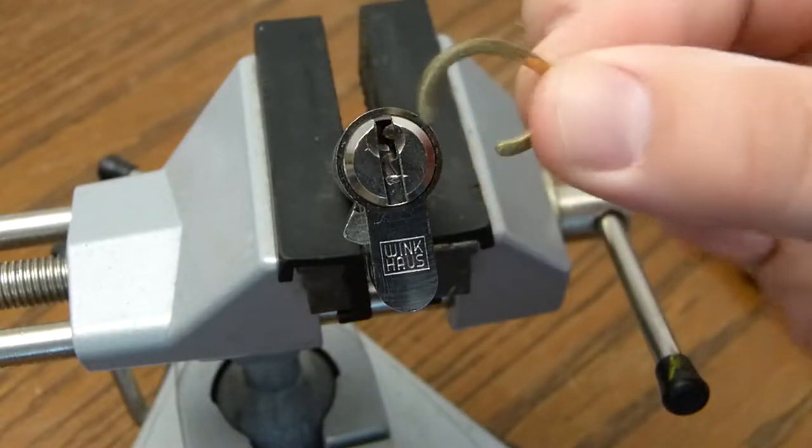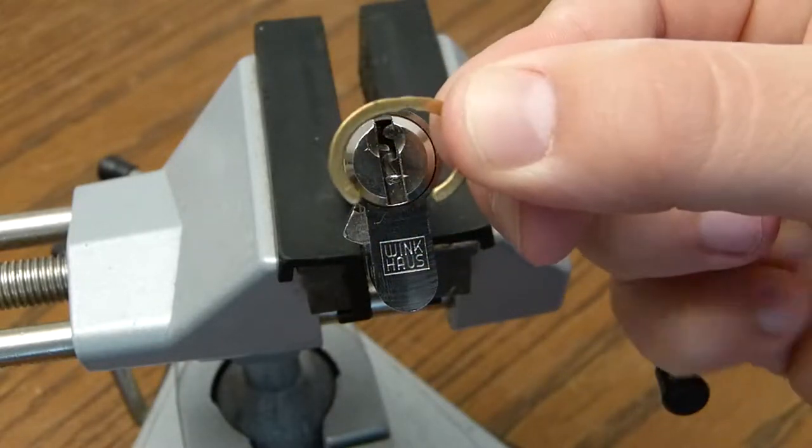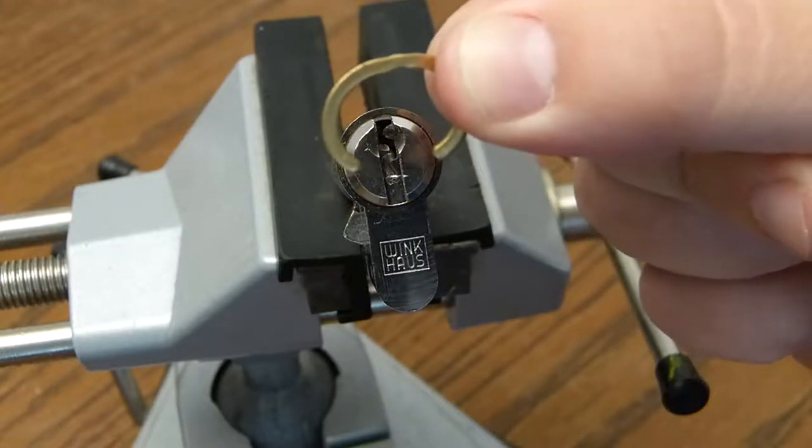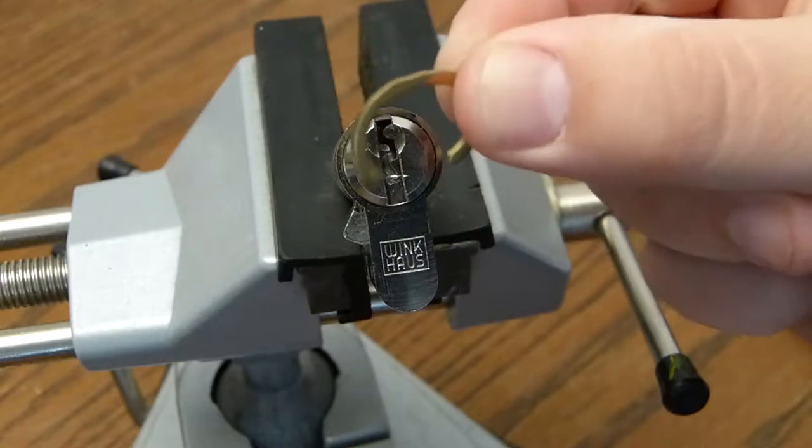On these cylinders there's normally a circlip like this one. It just bends and you can replace it with a new one or use the old one.